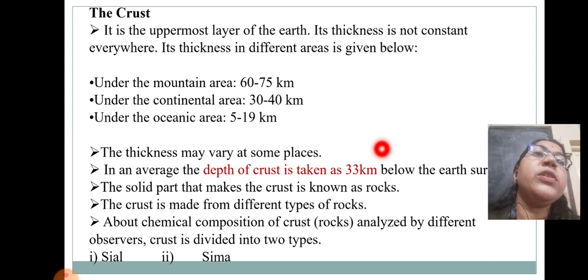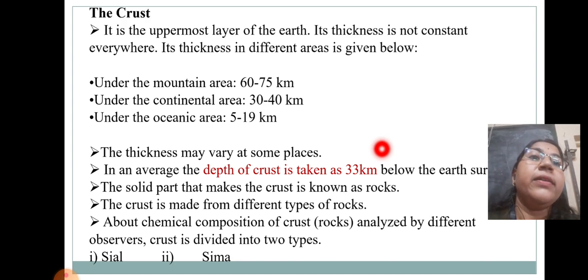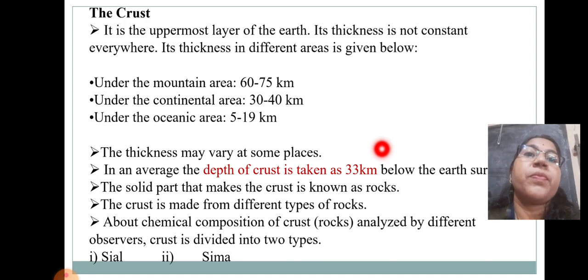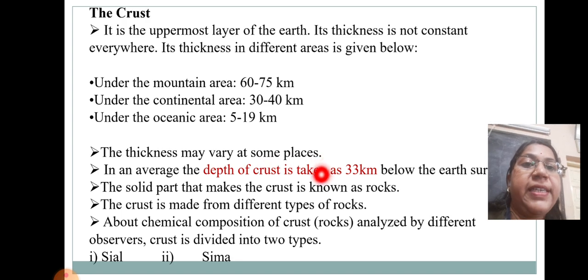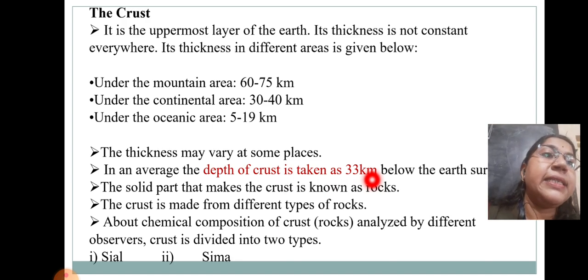The crust is the uppermost layer of the Earth. Its thickness is not constant everywhere. Under mountain areas, the thickness is 60 to 75 kilometres. Under continental areas, it is 30 to 40 kilometres. Under oceanic areas, it is 5 to 19 kilometres. On average, the depth of the crust is taken as 33 kilometres.